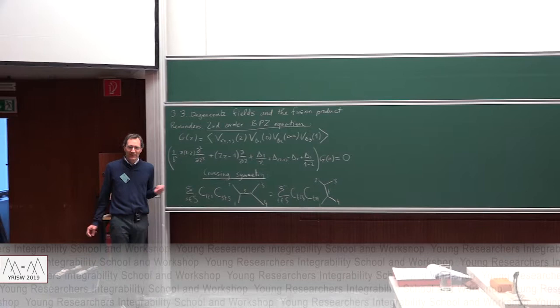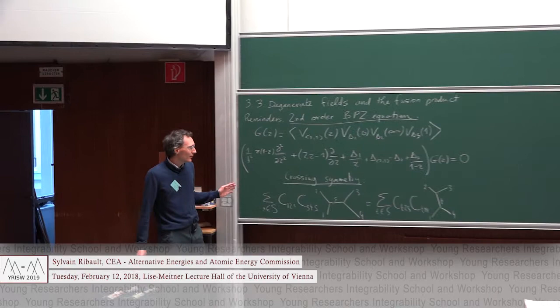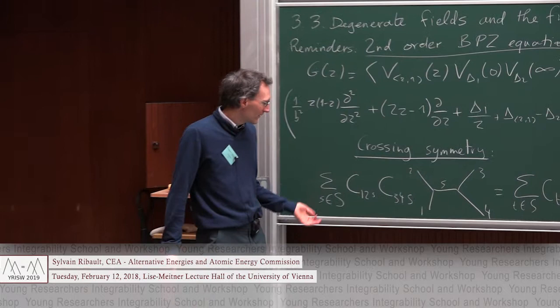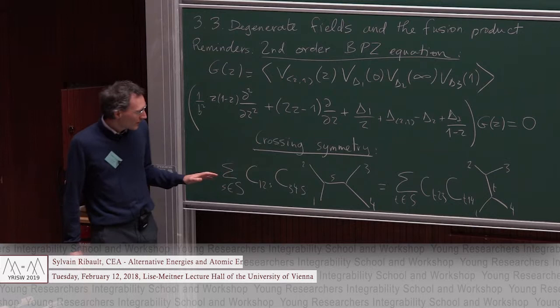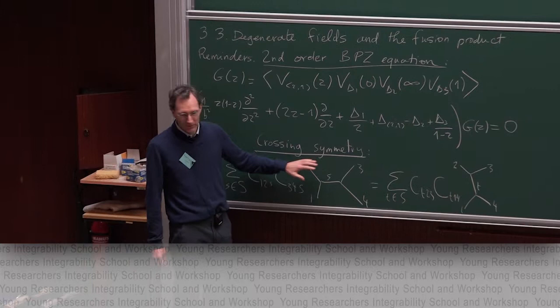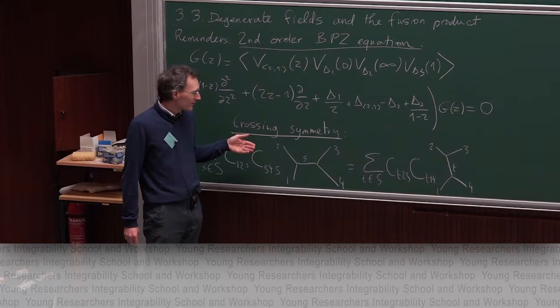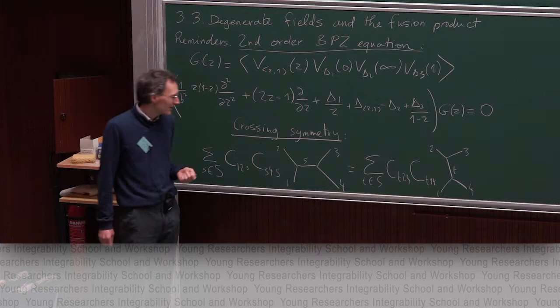Yesterday we encountered the crossing symmetry equation — that's crossing symmetry for a sphere four-point function. It's an equation for the spectrum S of the CFT and for the three-point structure constant C, and if you know this data you have essentially solved your conformal field theory. By saying it's an equation for S and C, I'm assuming we know the conformal blocks, which are not very simple in practice but are completely determined by symmetry.